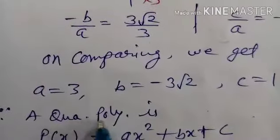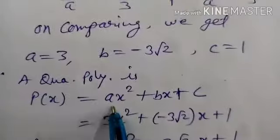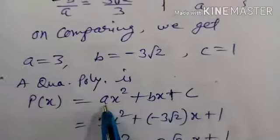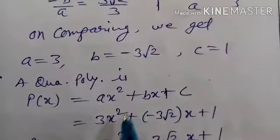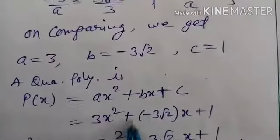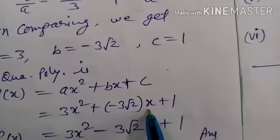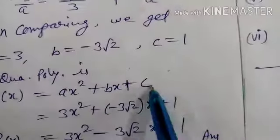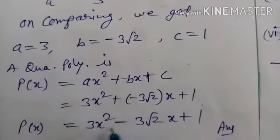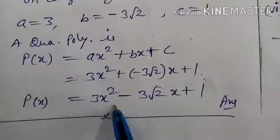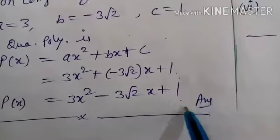Since the quadratic polynomial is p(x) equals x squared plus bx plus c, in place of a write 3: so 3x squared, plus b which is minus 3 root 2 (in bracket) into x, plus c which is 1. Simplifying: plus minus gives minus, so our quadratic polynomial is 3x squared minus 3 root 2 x plus 1. This is the answer.